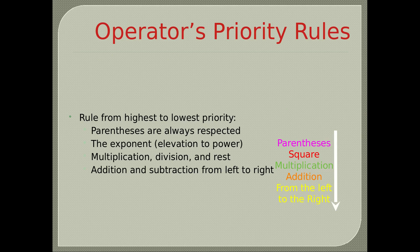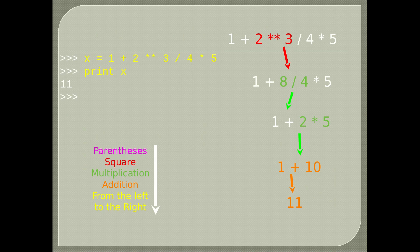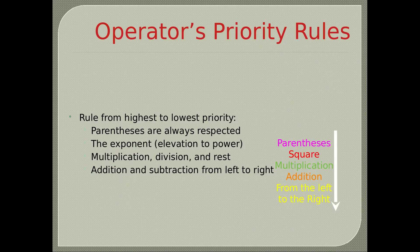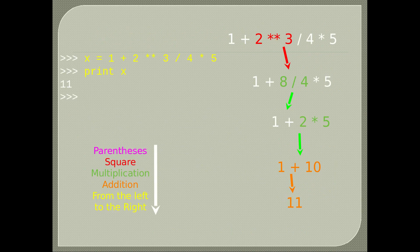For example: 1 + 2 ** 3 / 4 * 5 equals 1 + 2 multiplied by 5 equals 1 + 10 equals 11. So if you type x = 1 + 2 ** 3 - 4 * 5, then hit enter and type print X, the result is 11.